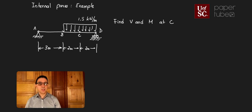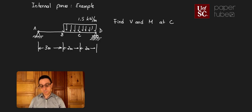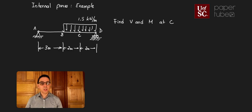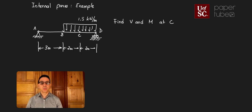Remember that V is what we use for shear. The first thing I need to do is find the reaction forces at A and at D. For that, I'm going to replace that distributed force by an equivalent point load.